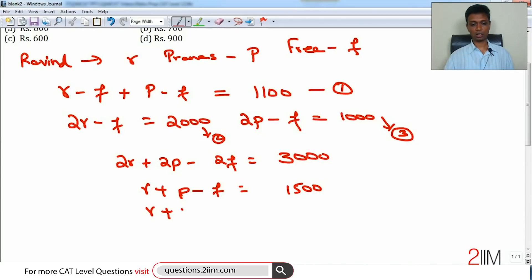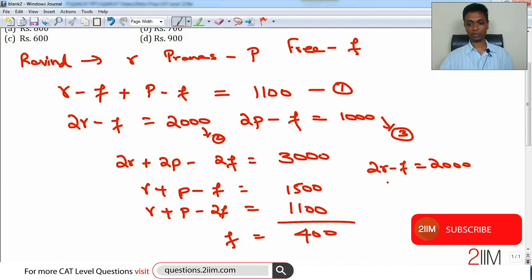Equation 1 gives us r plus p minus 2f equals 1100. We subtract one from the other, we get f equals 400. We know 2r minus f is 2000, f is 400, or 2r is 2400, r is 1200.